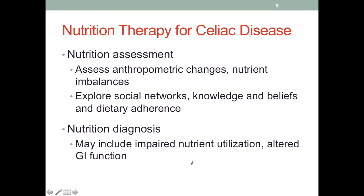For the nutrition assessment, we need to assess for anthropometric changes in both adults and children, because this disease leads to severe maldigestion and malabsorption which could definitely affect weight, and in children it could affect their growth rate. Nutrient imbalances are obvious as well. We also need to check social networks, knowledge and beliefs, and dietary adherence. Patients need to know what foods and food products contain gluten. This takes education so that they have this knowledge when buying things to cook for themselves or when dining out at restaurants. For the nutrition diagnosis, problems usually include inadequate intake, impaired nutrient utilization, and altered GI function.